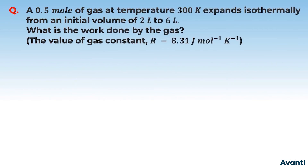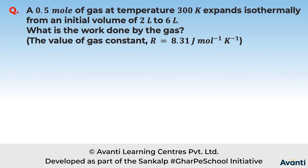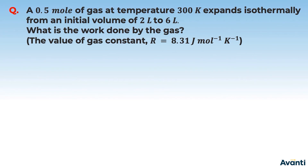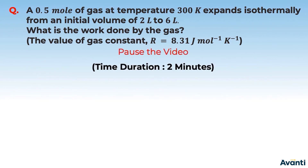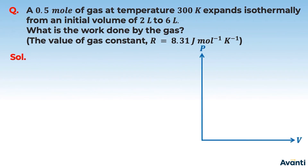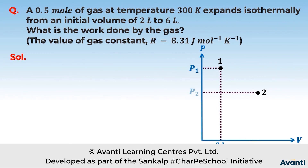Let's now do a concept test. 0.5 mole of gas at temperature 300 Kelvin isothermally expands from an initial volume of 2 liters to 6 liters. What is the work done by the gas? The value of the gas constant is given. On a PV graph between states 1 and 2, pressure P1 is unknown, volume V1 is 2 liters, pressure P2 is unknown, and volume V2 is 6 liters.